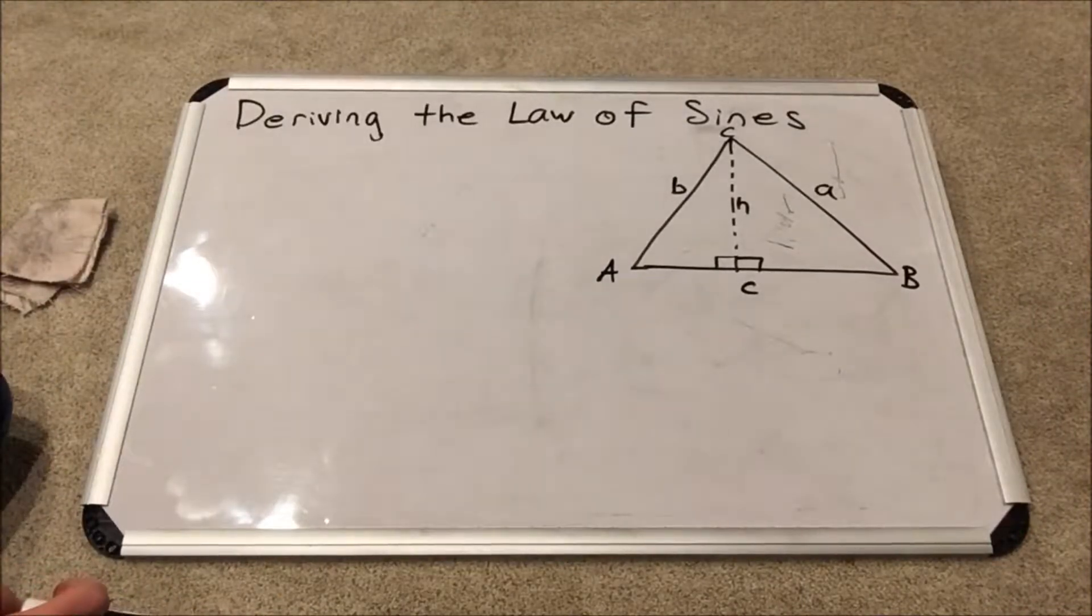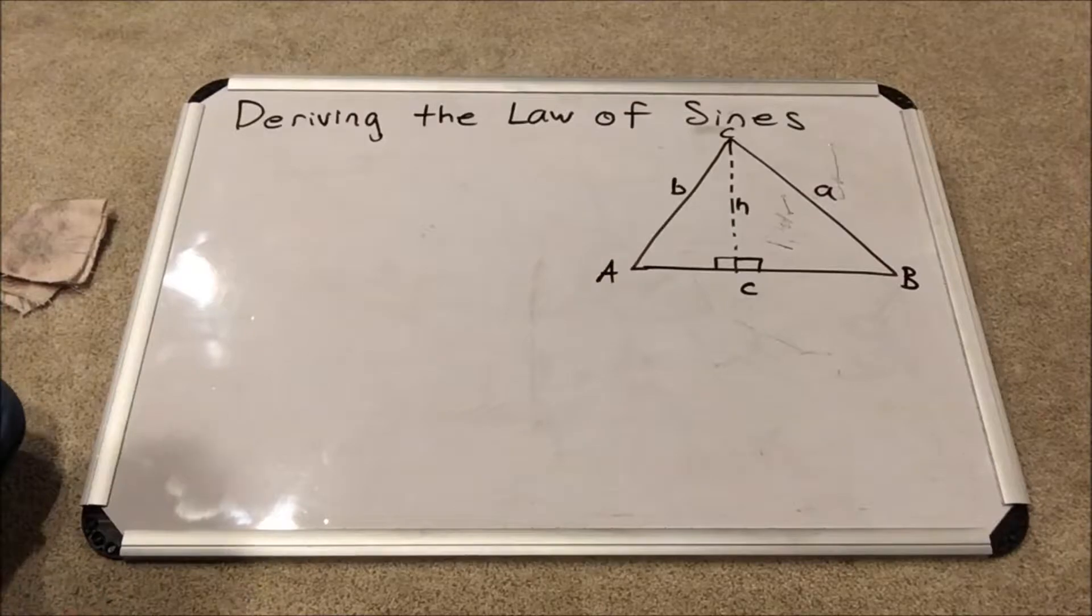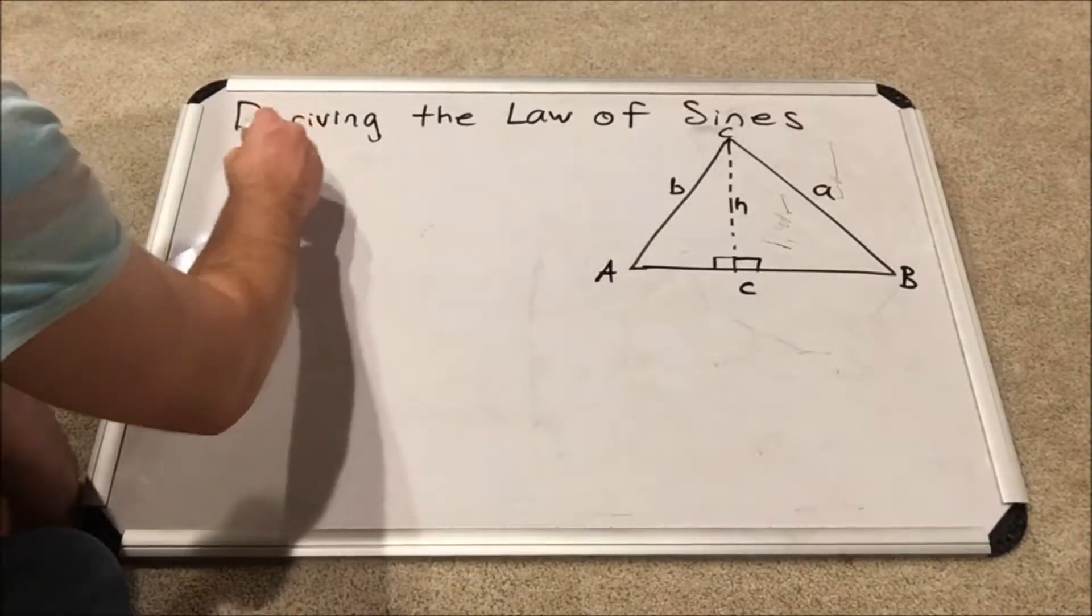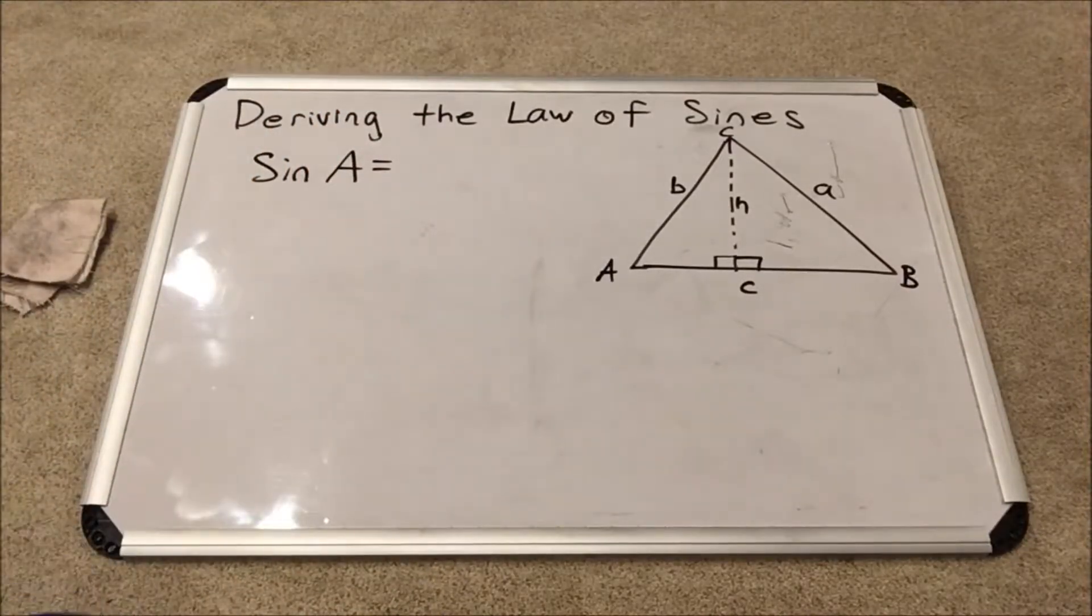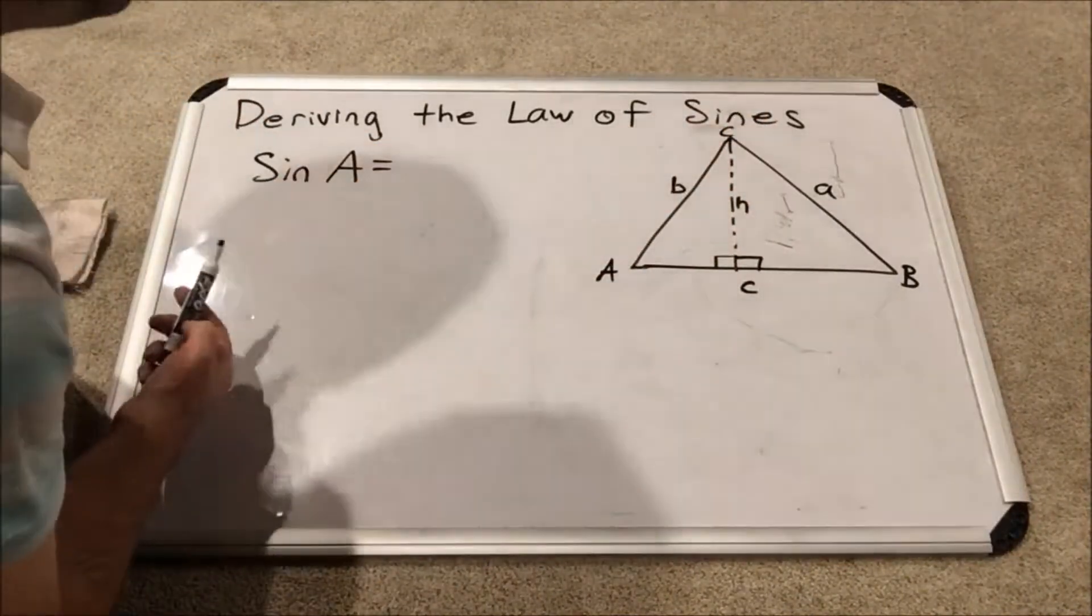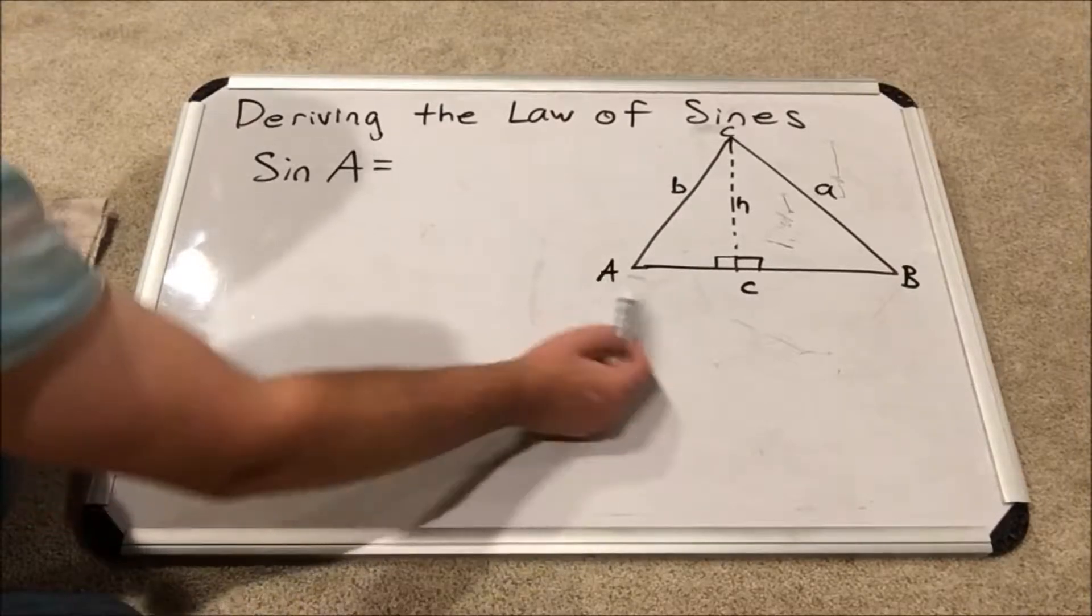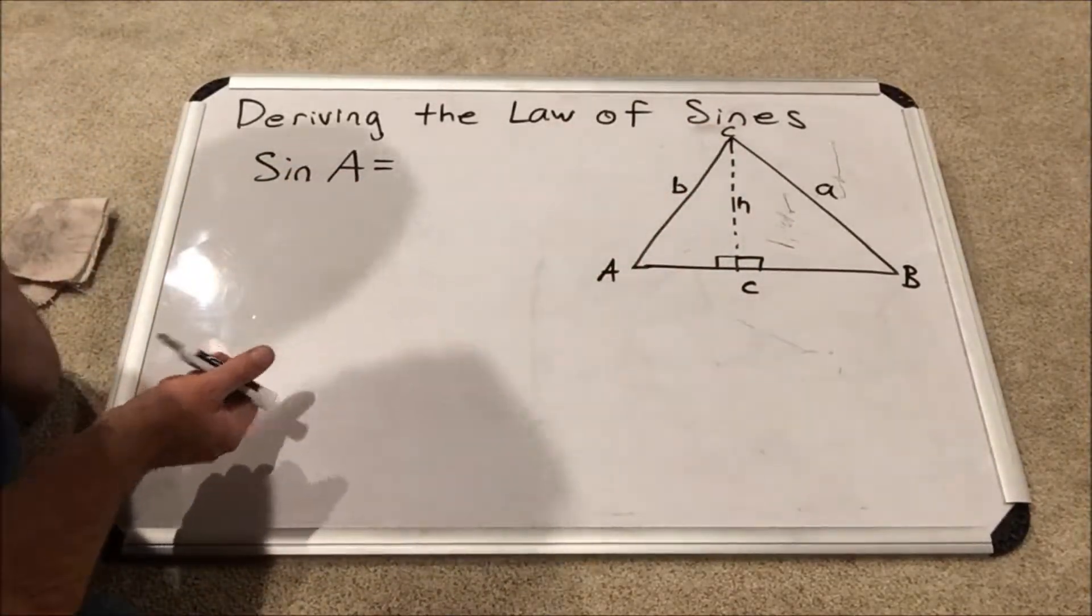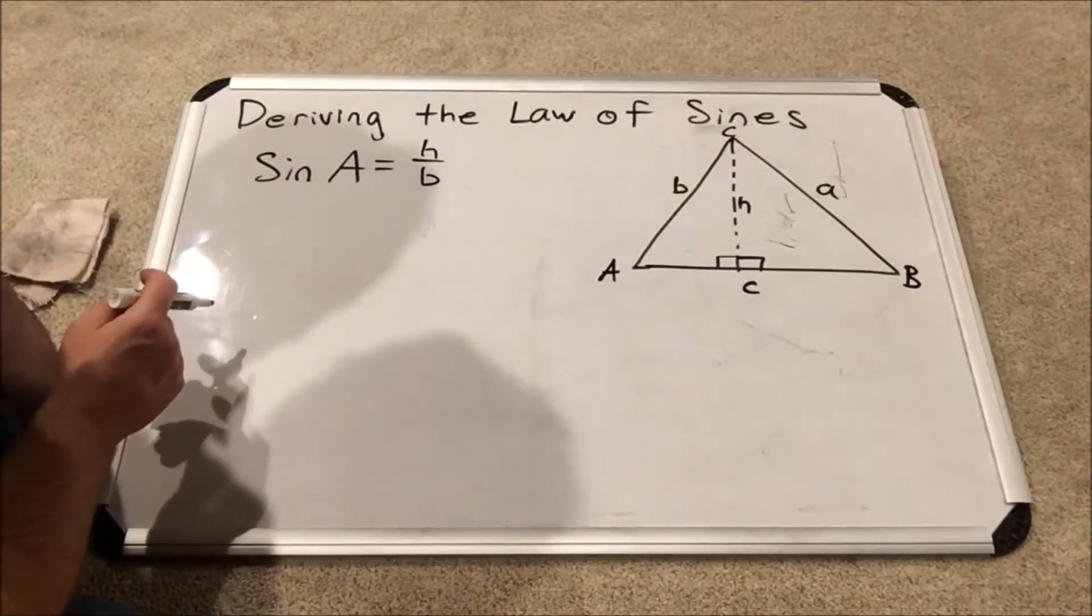And so we are going to write out some trig functions for those two triangles. First of all, we are going to write out the sine of angle A. Let's look at what that is in the context of this right triangle on the left. Angle A, the sine of angle A would be the opposite side, which is H over hypotenuse of that triangle B.